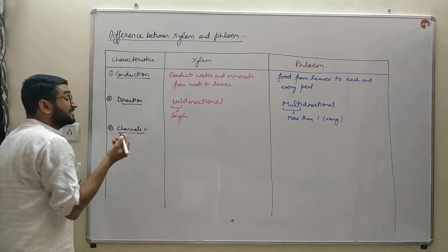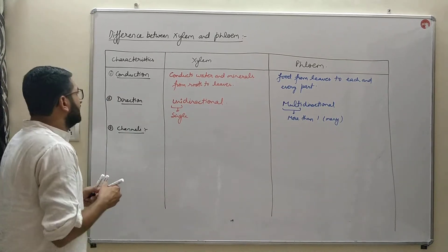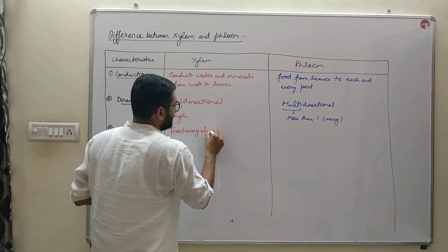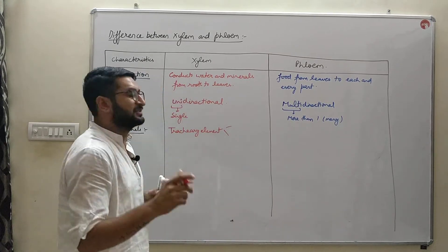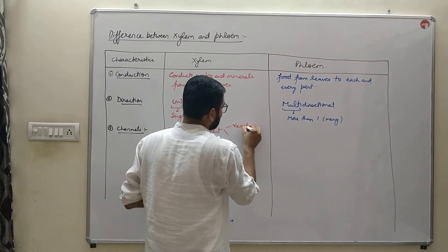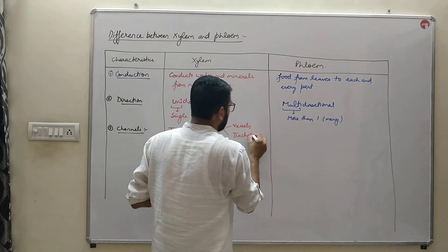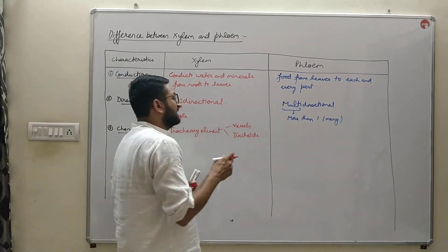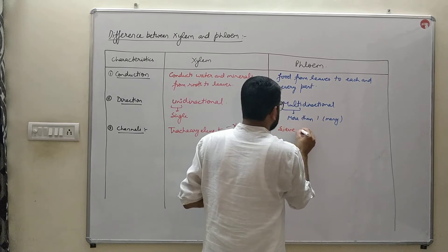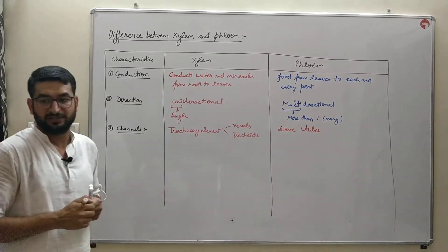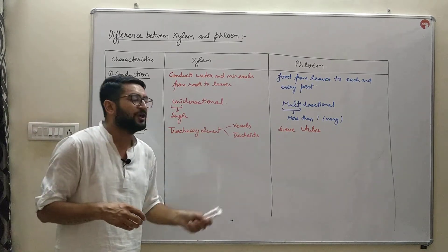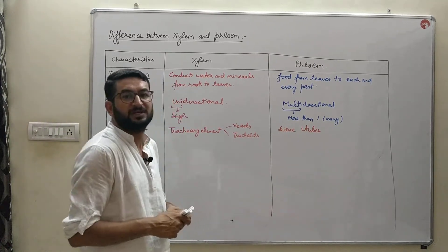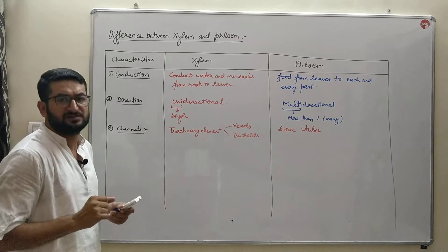The conducting channels would be a more appropriate term. The conducting channels of xylem are tracheary elements, as explained in a previous video. The tracheary elements are composed of two parts: xylem vessels and tracheids, which are collectively known as tracheary elements. Whereas the conducting elements in case of phloem are sieve tubes — the major transporting channels of phloem are sieve tubes.